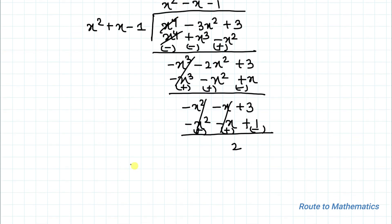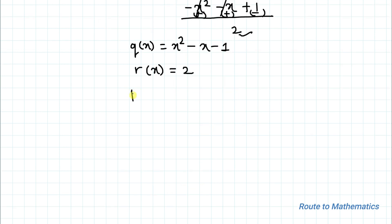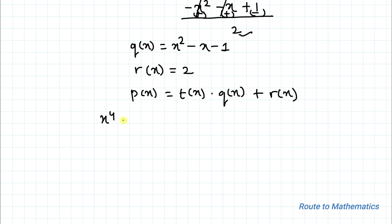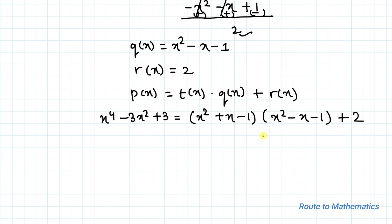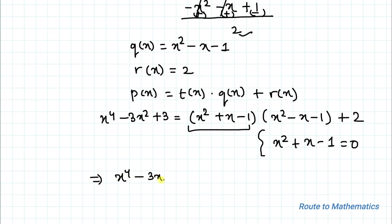The quotient is q(x) = x² - x - 1 and the remainder is r(x) = 2. By the division theorem we can write: p(x) = t(x) · q(x) + r(x), which gives x⁴ - 3x² + 3 = (x² + x - 1)(x² - x - 1) + 2. Since in the question x² + x - 1 = 0, substituting this value gives x⁴ - 3x² + 3 = 0 · (x² - x - 1) + 2 = 2. So 2 is our answer.